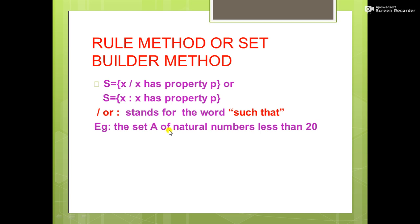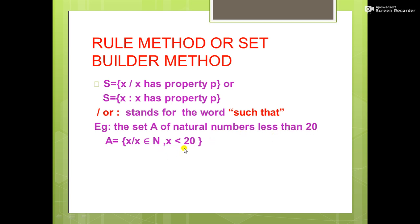The slash or colon stands for the word 'such that.' For example, the set A of natural numbers less than 20 is written as: A = {x : x ∈ ℕ, x < 20}. That means inside this set, all natural numbers less than 20 are included.